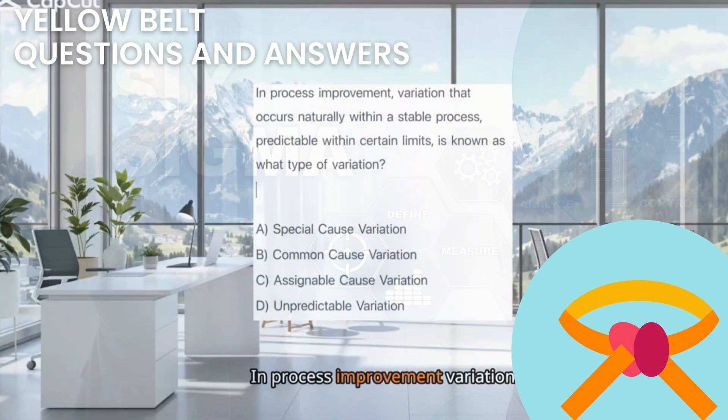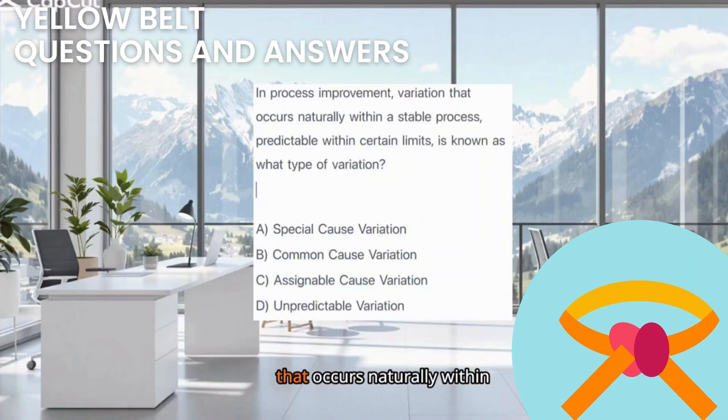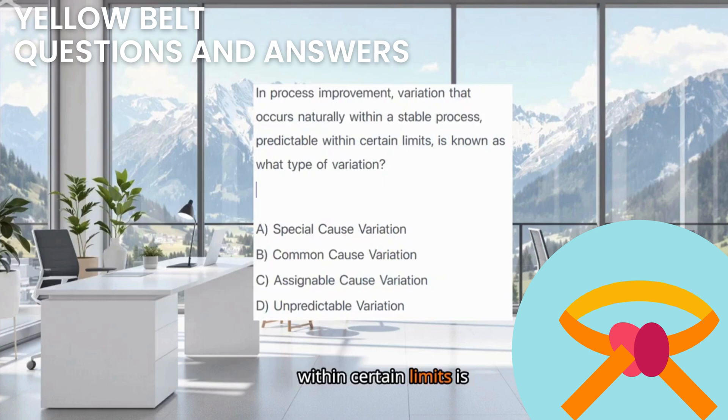In process improvement, variation that occurs naturally within a stable process, predictable within certain limits, is known as what type of variation?